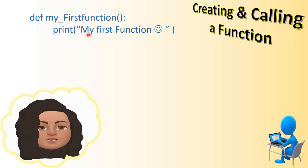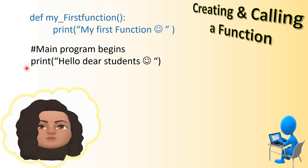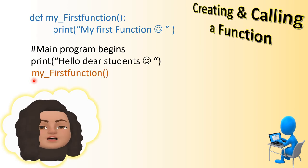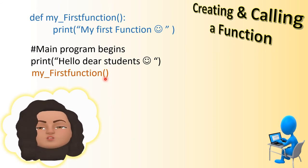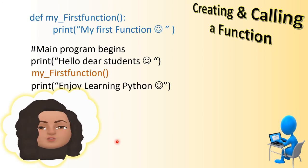The function definition ends there. Then the main program begins - the first statement is a print statement printing 'hello dear students'. Now to use the function which is defined, we have to call or invoke it by just specifying the name of the function, which is 'my_first_function'. There are no parameters, so no need to give any arguments inside the bracket. Then another print statement follows.